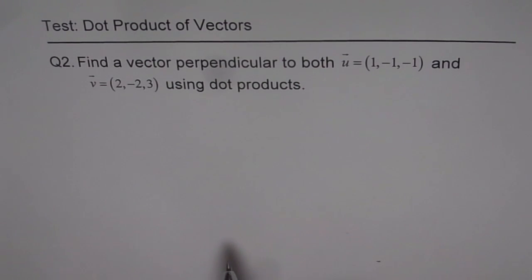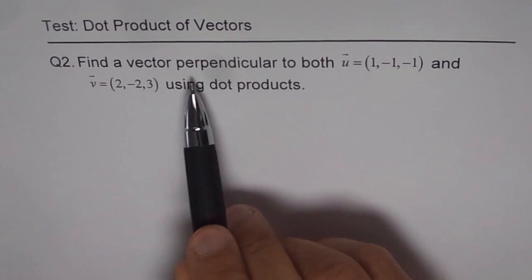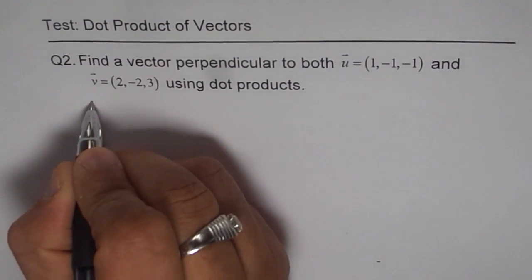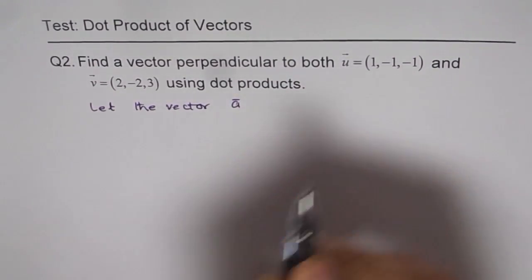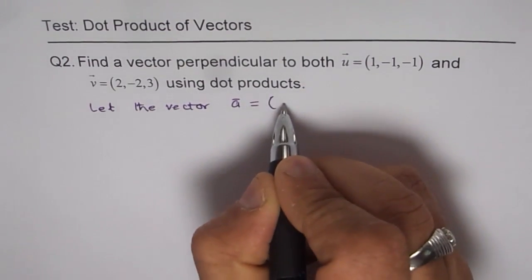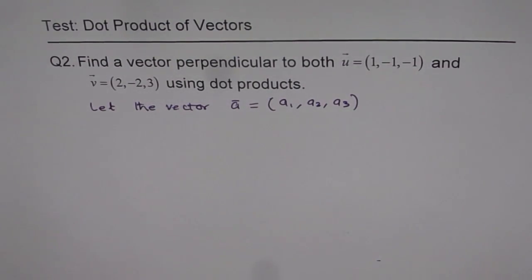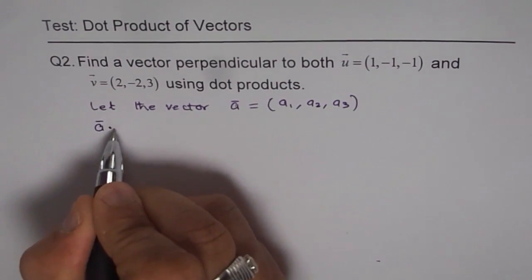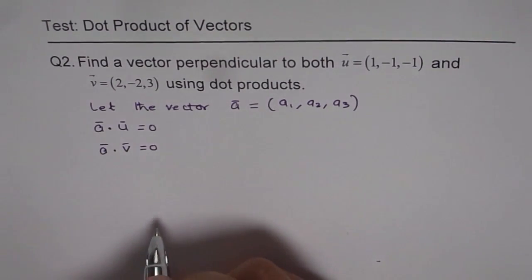My suggestion is: first, think about it. When we say find a vector perpendicular to both u and v, that means let the vector be a. So let's define vector a as perpendicular to both u and v, and define a as (a1, a2, a3) with three direction numbers. Since it is perpendicular to both u and v, we can say vector a dot u equals zero and vector a dot v equals zero. So we get two equations.